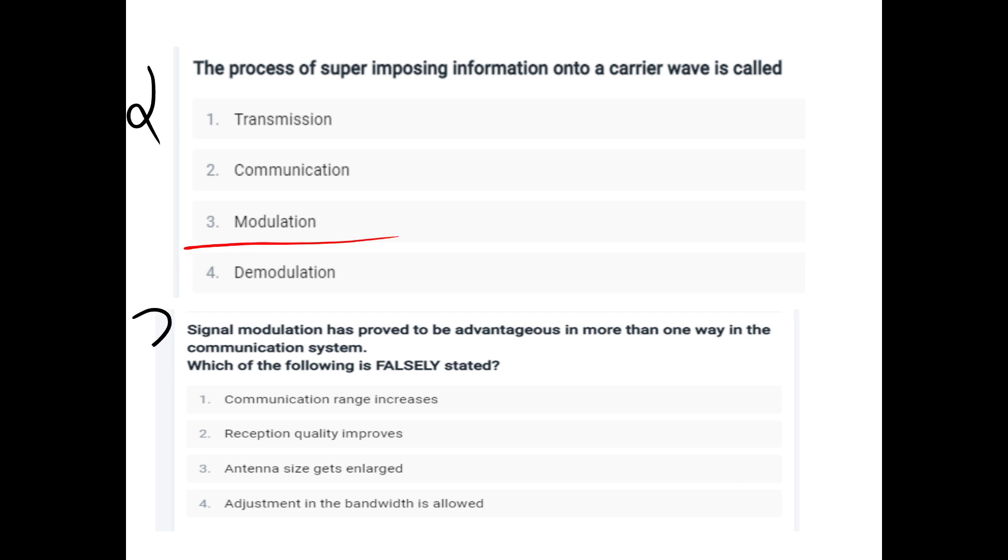Question three: Signal modulation has proved to be advantageous in more than one way in communication systems. Which of the following is falsely stated? The statement is: antenna size gets enlarged.